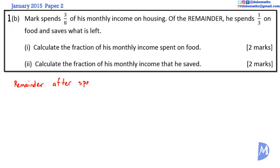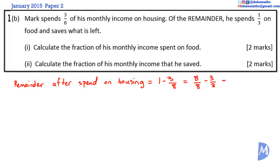The remainder after his spend on housing is equal to the whole amount minus the 3 eighths that he spent. So the whole amount is 1, which can be represented as 8 over 8. So it's 8 over 8 minus 3 eighths. We have both fractions over the same denominator, so we add the numerators: 8 minus 3 is 5. So the remainder is 5 eighths.